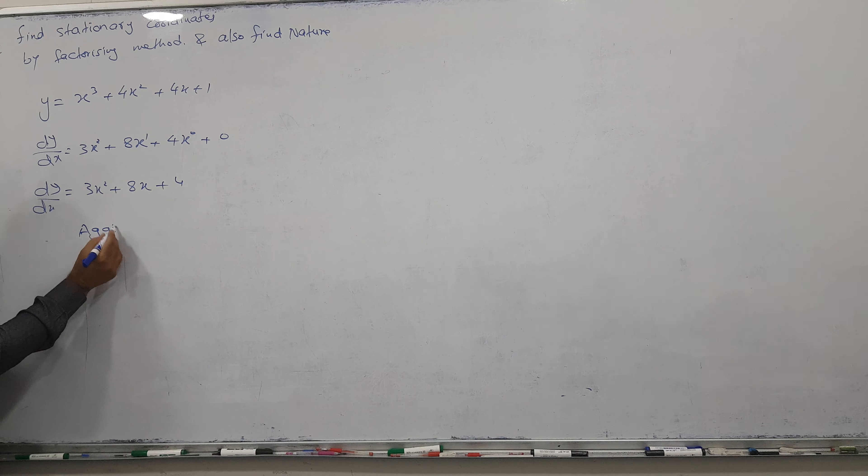Now I'm going to proceed. For stationary points, put dy/dx = 0. So 3x² + 8x + 4 = 0. As mentioned, factorization method, so we will go for factorization.